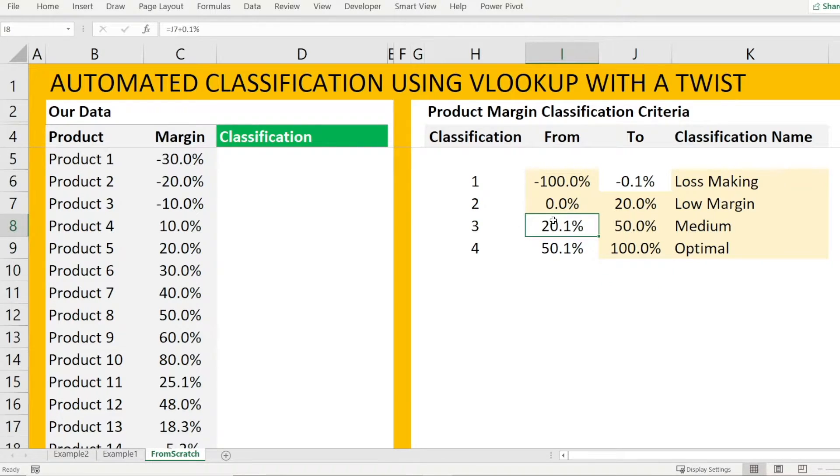So I have created a formula in here that says get the previous to, previous bucket to plus 0.1% and previous plus 0.1%. And this is to avoid overlap.